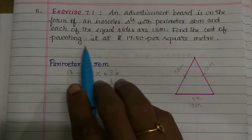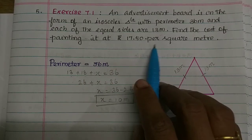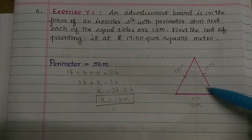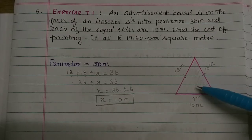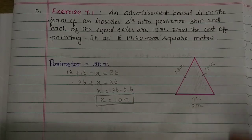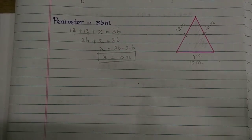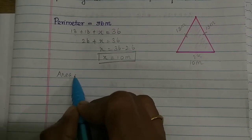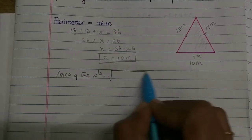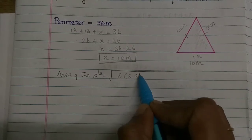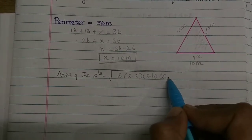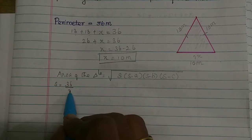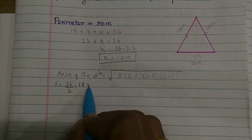Find the cost of painting it at rupees 17.50 per square meter. So cost of painting requires the area of the triangle — the area of the isosceles triangle. The area of a triangle is equal to the square root of s times (s minus a) times (s minus b) times (s minus c). The s value: perimeter is 36 divided by 2, so s equals 18.